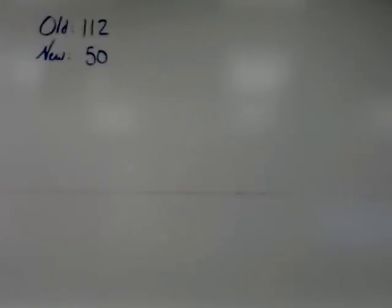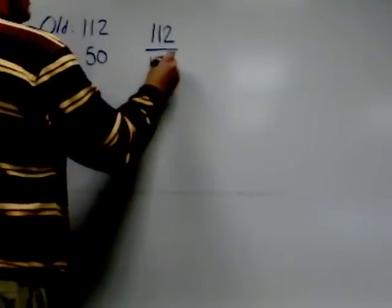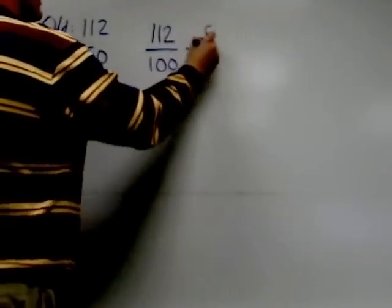However, the procedure remains exactly the same. We continue using that old over 100 equals new over x formula. So I have 112 over 100 equals 50 over x.